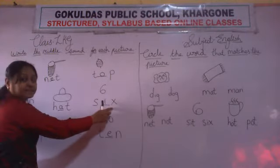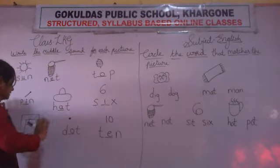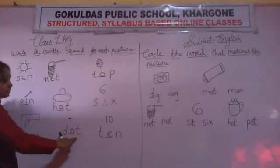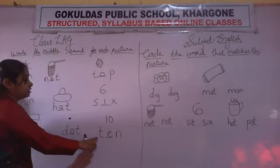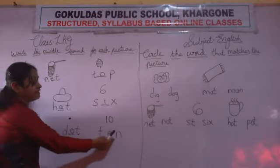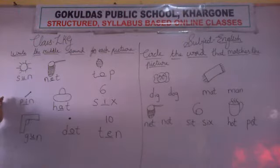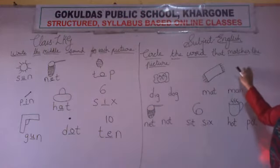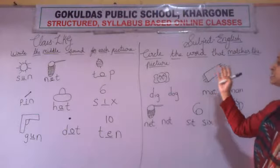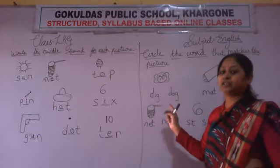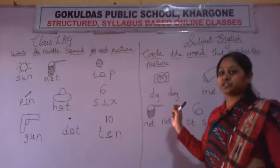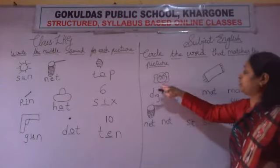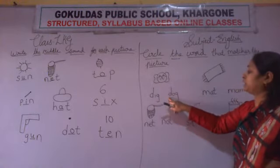Circle the word that matches the picture. What you have to do? Pictures are given. We have to circle the correct word. The correct word of the picture.